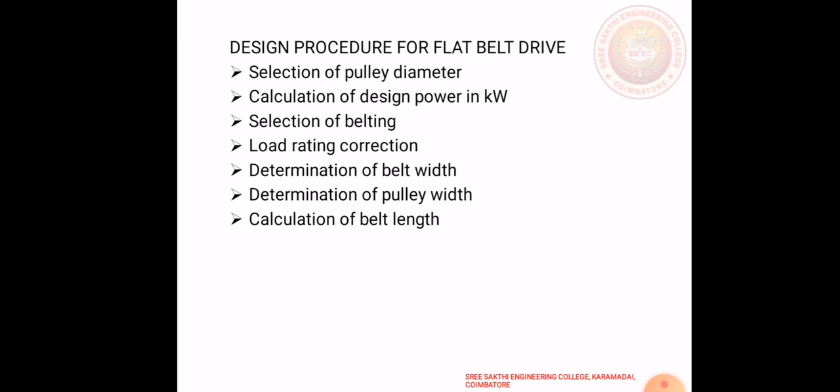The procedures for designing a flat belt drive are: selection of pulley diameter, calculation of design power in kilowatts, selection of belting, load correction factor, determination of belt width, determination of pulley width, and calculation of belt length. These are all the steps for the design of flat belt drive.